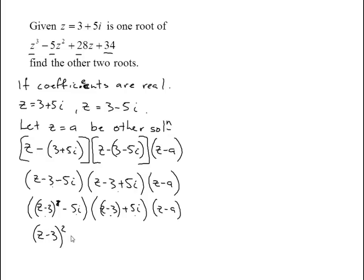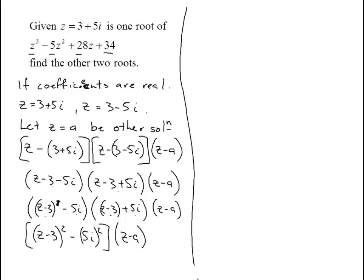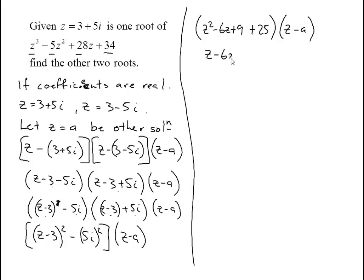So that becomes z squared minus 6z plus 9 — that's (z minus 3) all squared — then minus 5i squared: i squared is minus 1 and 5 squared is 25, so that becomes plus 25. Times z minus a. Cleaning that up: z squared minus 6z plus 34, times z minus a.